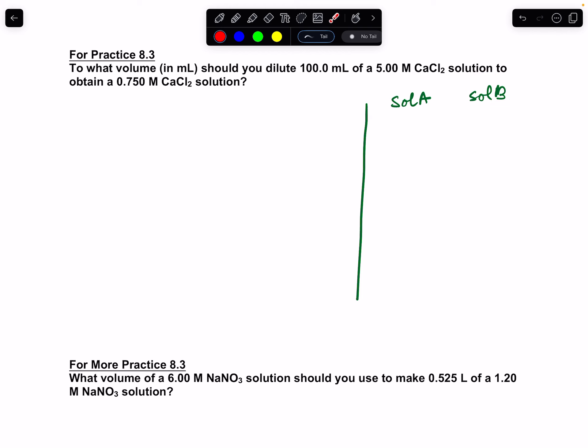Solution A has a molarity of M1 and a volume of V1, and solution B has a molarity of M2 and a volume of V2. What's important to understand is that when you take solution A and you dilute it to make solution B, the number of moles are constant.